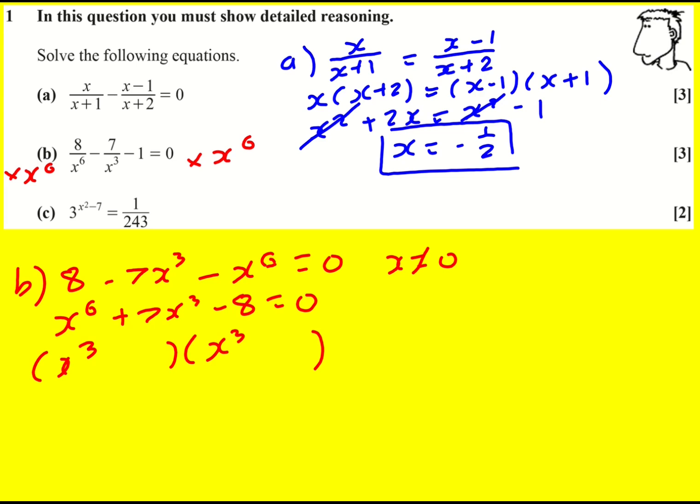So just normal factorizing now, I'm going to need a plus 8 and a minus 1 to get the 7x cubed. Just to say if I let u equal x cubed then I would get u squared is x to the 6.